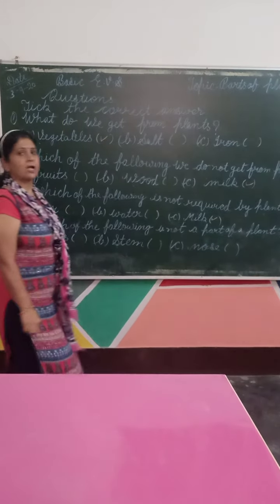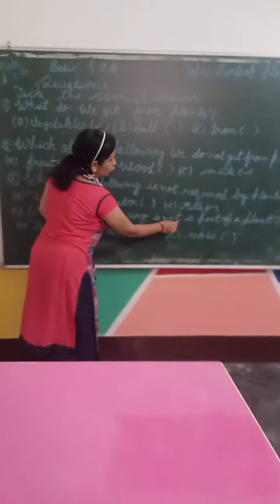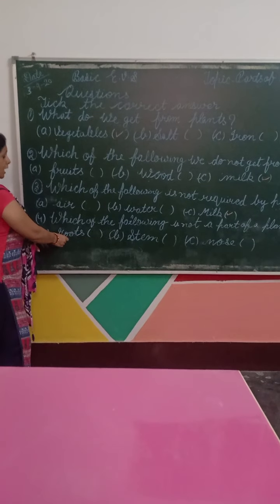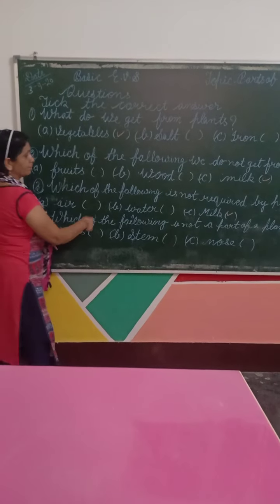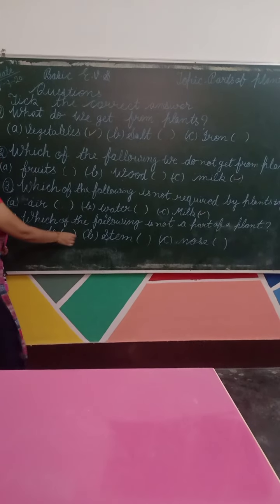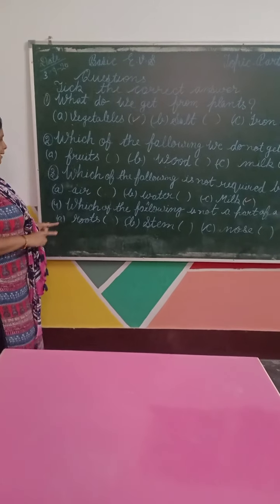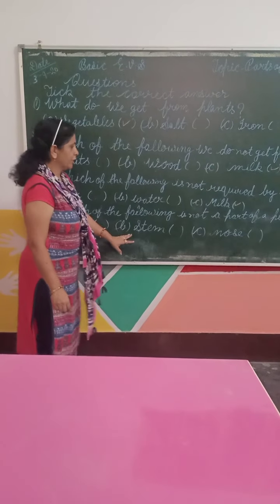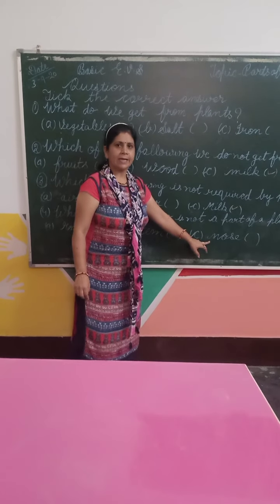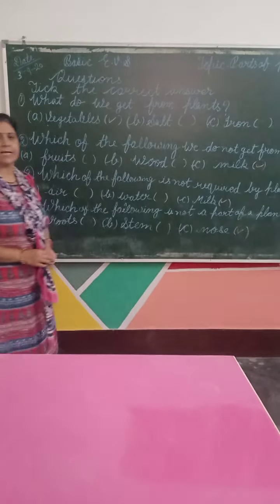Clear this. Which of the following is not a part of a plant? Three options: Roots, Stem, Nose. Look at that, there are roots and stem. Have you seen the nose? No? The answer is Nose. Okay students, understood?